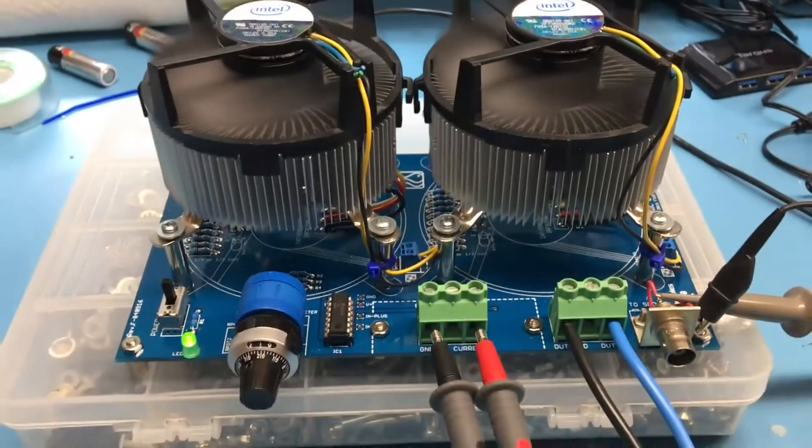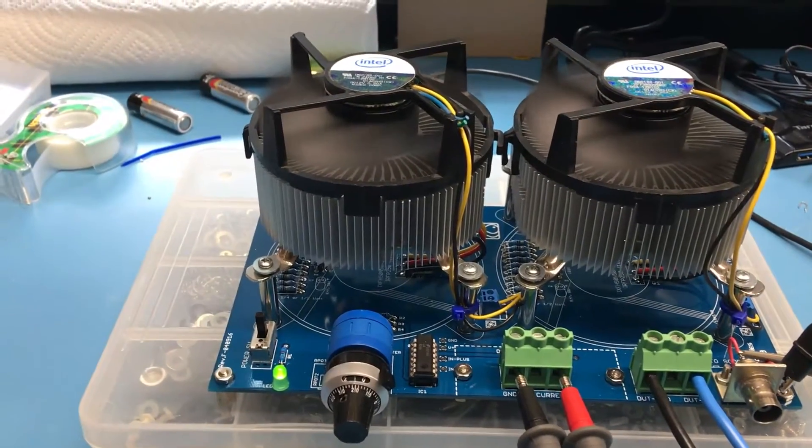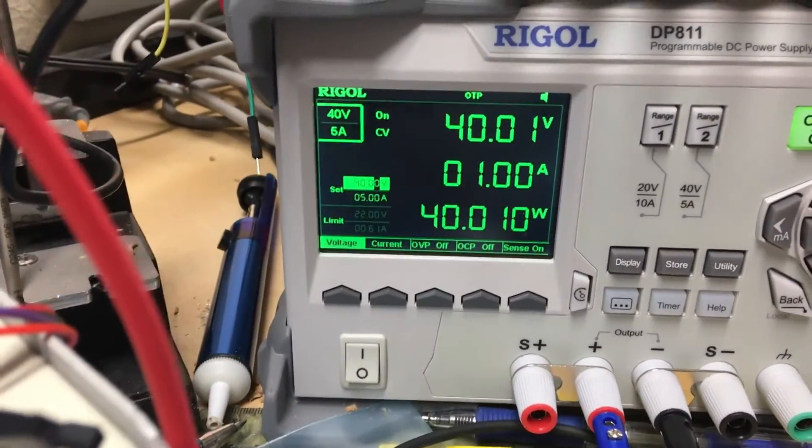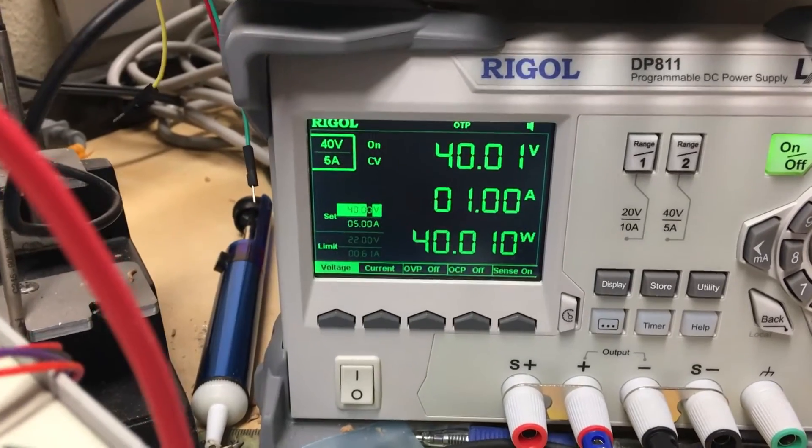Current draw on the load. If I come over to the DP-811, you will see it showing exactly 1 amp of current draw.